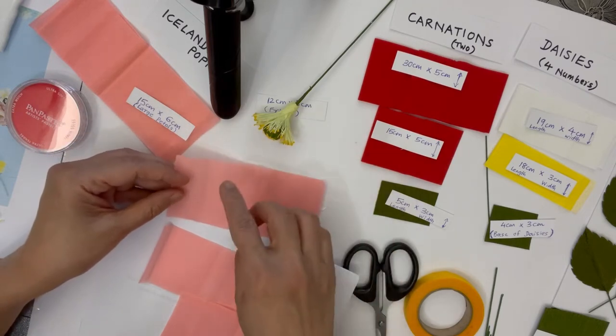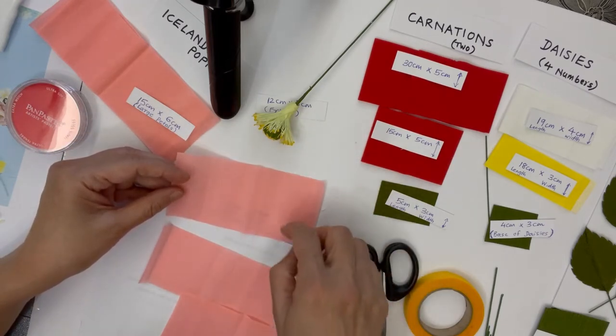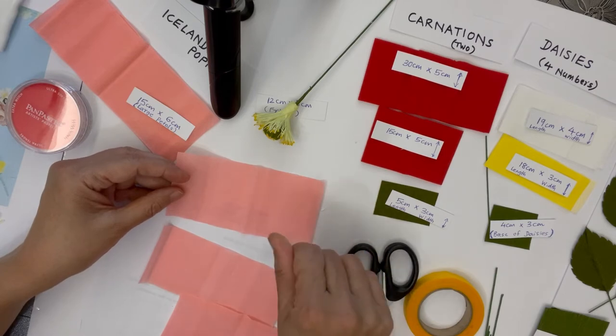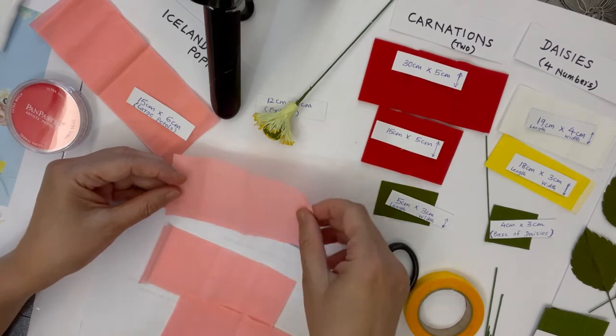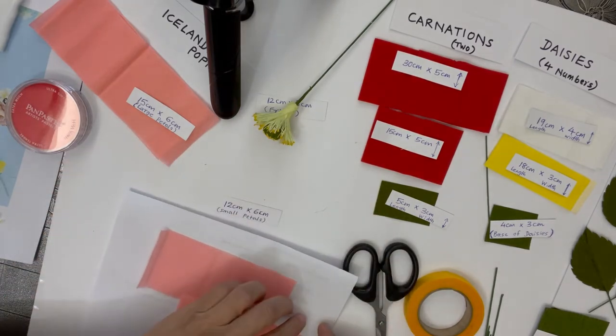You have to be careful with the grain. The grain should always be vertical whenever you're creating any of the flowers. It shouldn't be horizontal, it should be vertical.